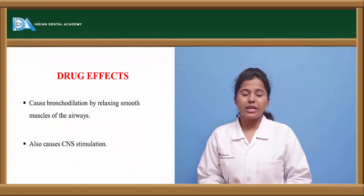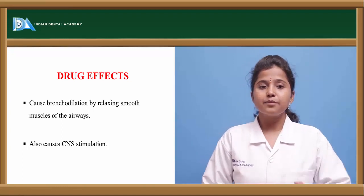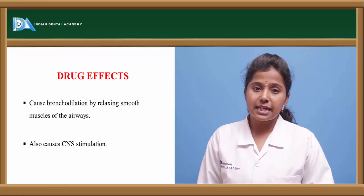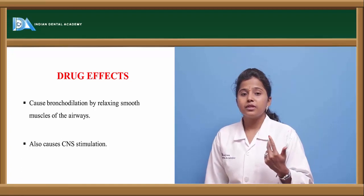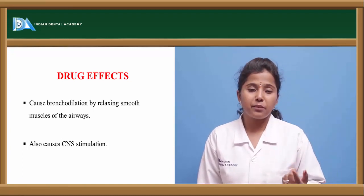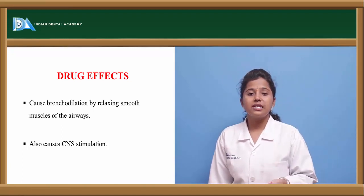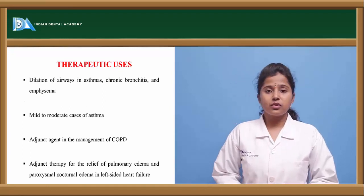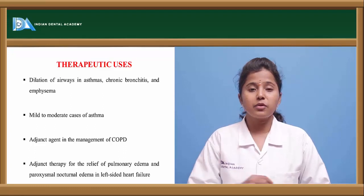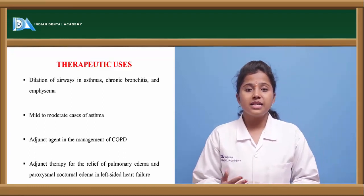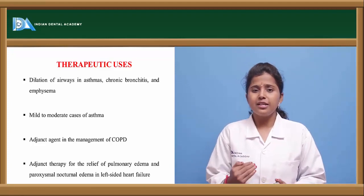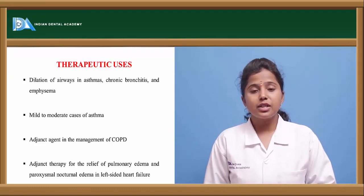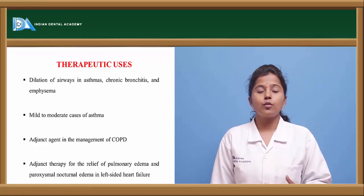When methylxanthins are taken, there occurs bronchodilatation — relaxation of the bronchial smooth muscle. These methylxanthins also exert their action by CNS stimulation; caffeine in coffee or tea makes the brain work sharper because of this CNS stimulant effect. Methylxanthins are used in chronic asthmatic disorders but are not used in acute asthmatic conditions — if a person is initially showing symptoms, methylxanthins are not recommended. These methylxanthins are also used in the prophylactic treatment of COPD — chronic obstructive pulmonary disorder.